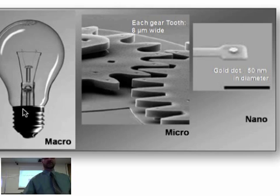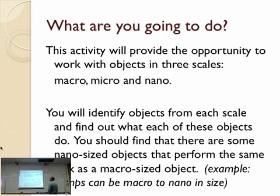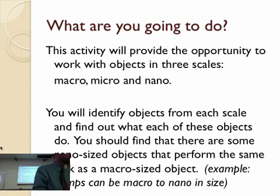There are lots of definitions for micro and nano, and we'll talk more about that throughout the semester. Today we're going to do an activity that will provide an opportunity to work with objects at three scales: macro, micro, and nano. You're going to identify objects that fit into different scales — it's to give you a gut feeling of what a nanometer is and what 100 nanometers or one micron means. You'll fill in a chart — is a virus 10 nanometers or 100 nanometers? What about a bacteria, a cell wall, or the width of a hair?